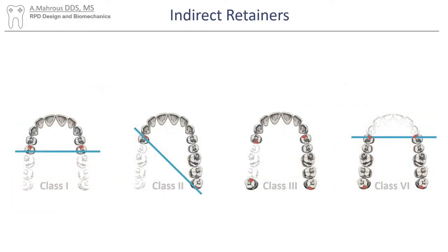If we go back to our four basic classifications, we will project the line perpendicular to the fulcrum line, or two equidistant lines, and place our indirect retainers on strong abutment teeth as far away as possible from the fulcrum line.